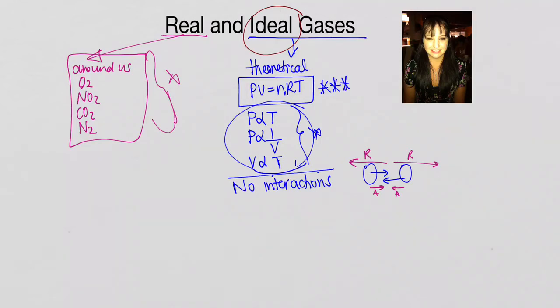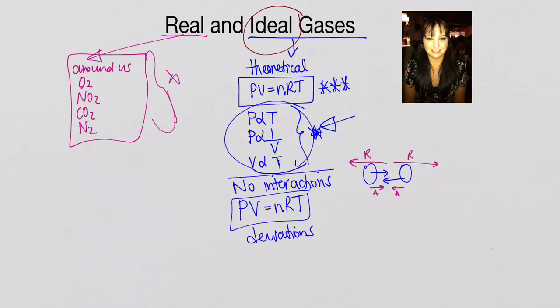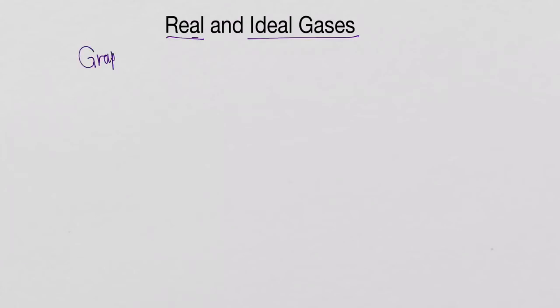If we assume that all ideal gases follow those three mathematical relationships perfectly, they will not deviate from the predictions you can make from the ideal gas equation. In a real gas, there will be some deviations under certain conditions. For grade 11s, you need to be able to interpret those changes and deviations on graphs.